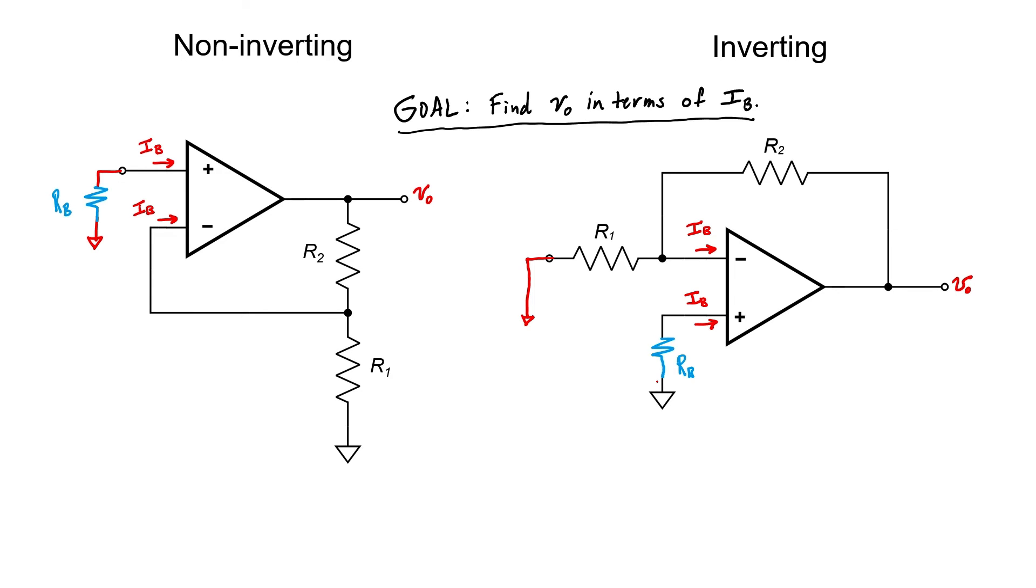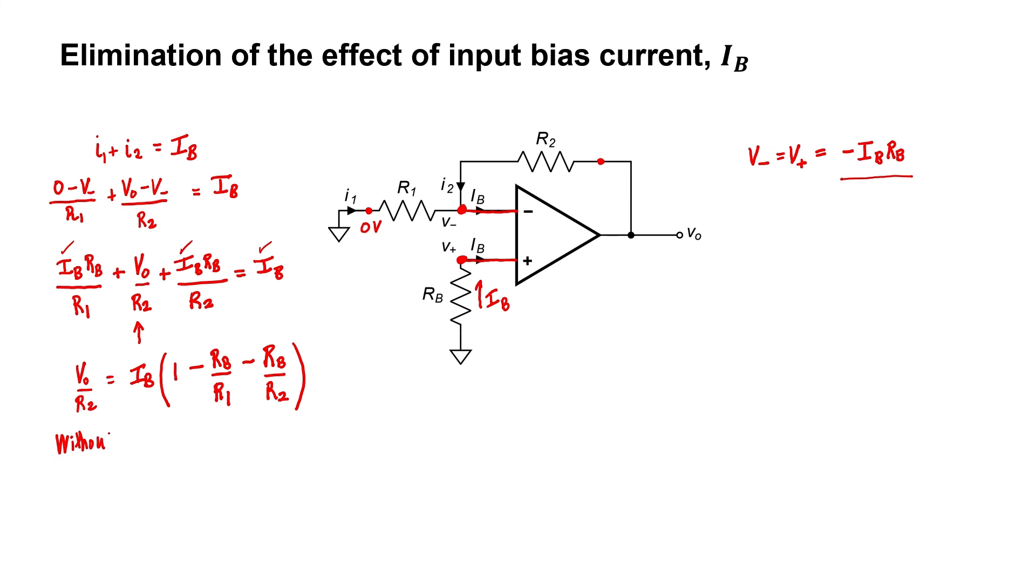In both of these circuits, if I remove RB, it's effectively saying RB equals zero. If we rewrite this expression and substitute RB equals zero, then I wind up with V0 over R2 is just IB. Or, equivalently, the output voltage equals R2 times IB. It's impossible to eliminate the effect of the bias current on the output voltage. If I require a particular gain in my amplifier, then R2 has to be tuned.